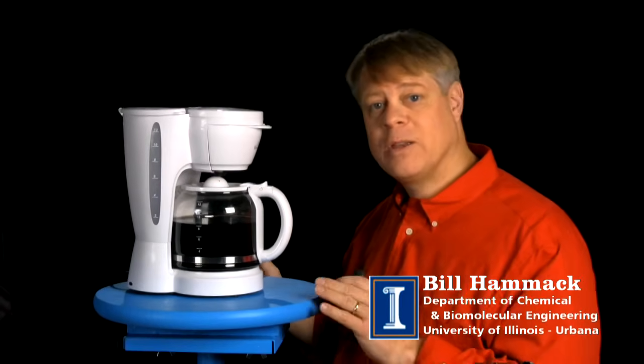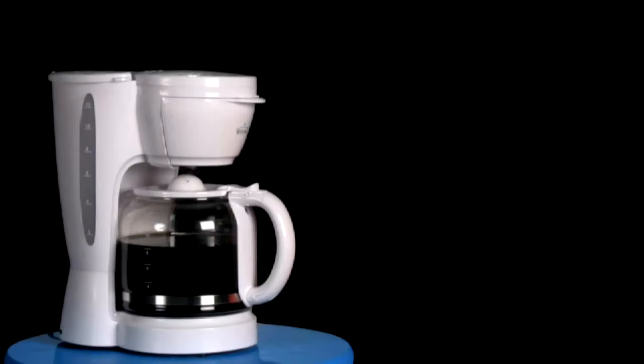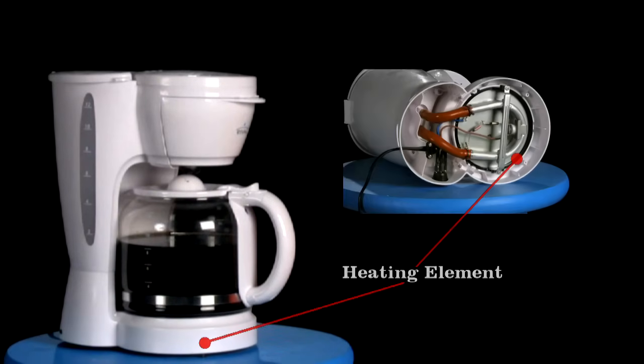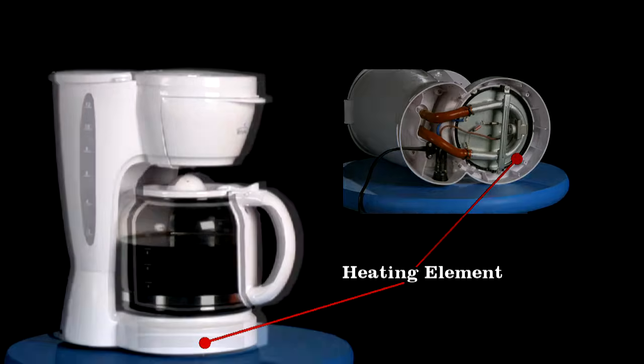To engineer an object means to make choices, and I'll show you with this coffee maker. The key choice? To use a single heating element to keep the cost low, $9 in the case of this coffee maker.